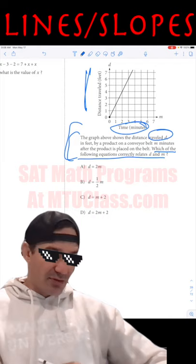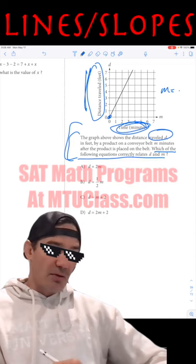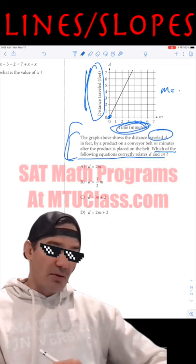m is the x value, right? That's right here. d is our y value. We start at time zero. When m equals zero, d has to equal zero. So we can't have anything with a y-intercept because the y-intercept is going to be zero.